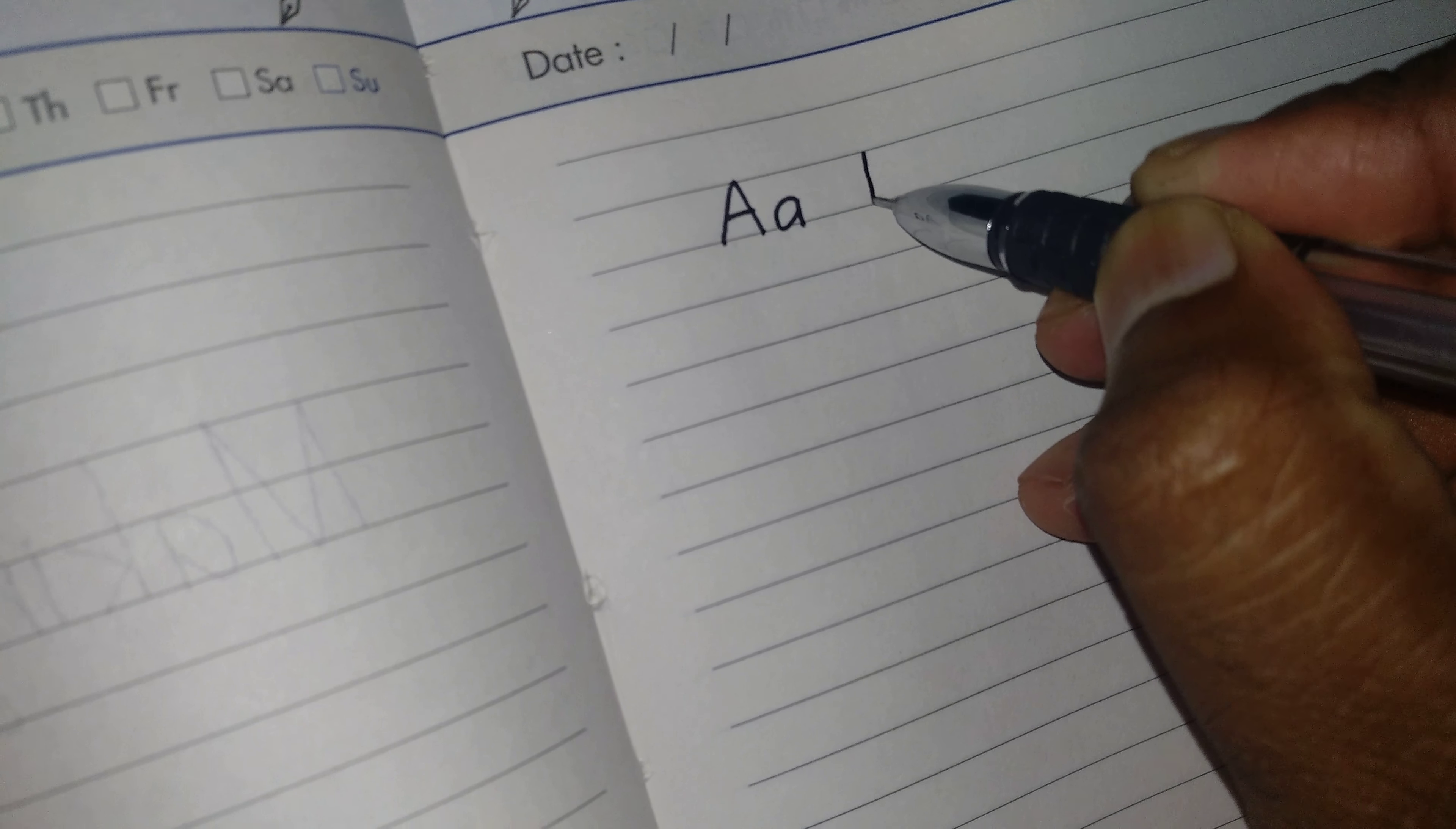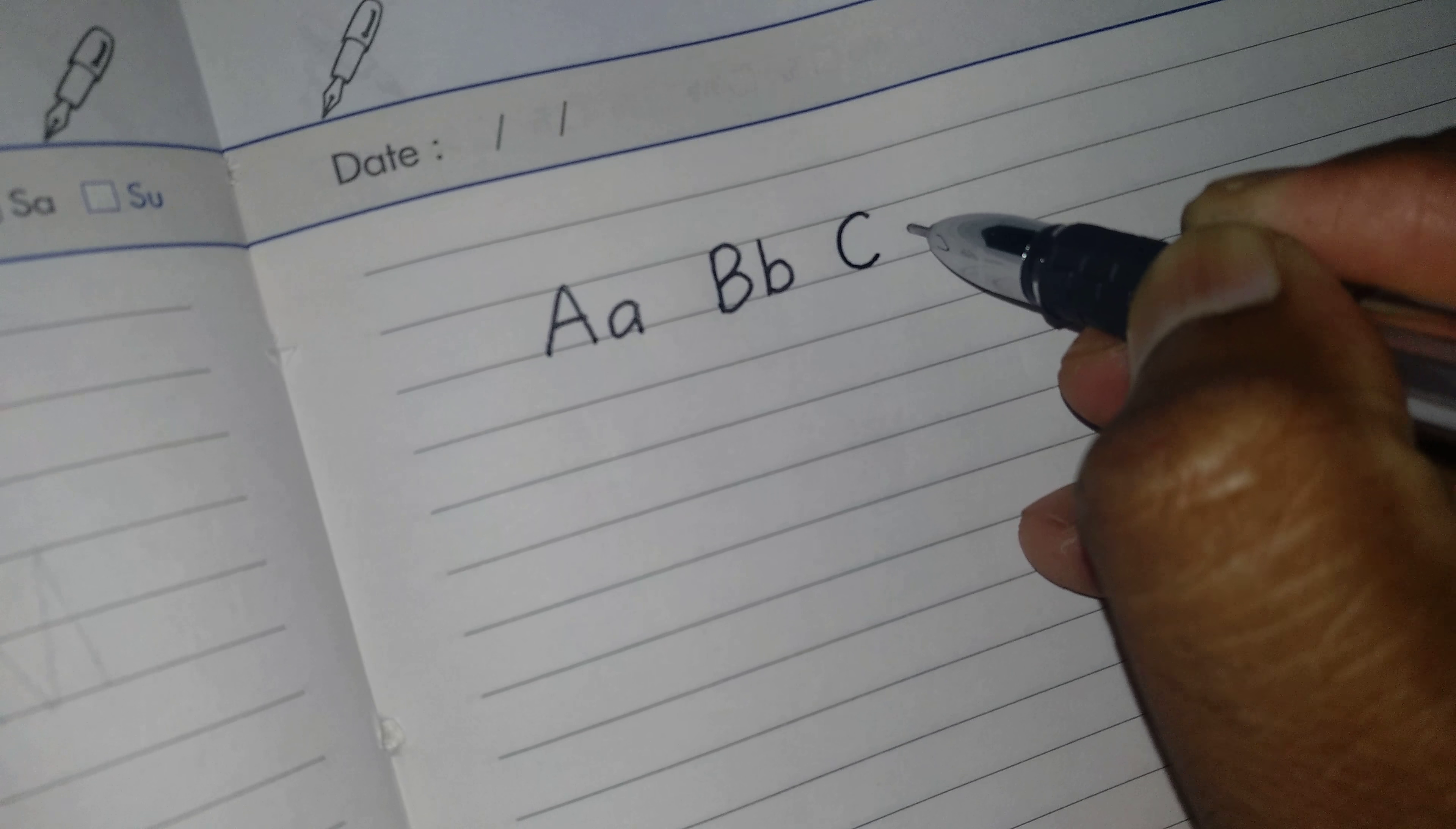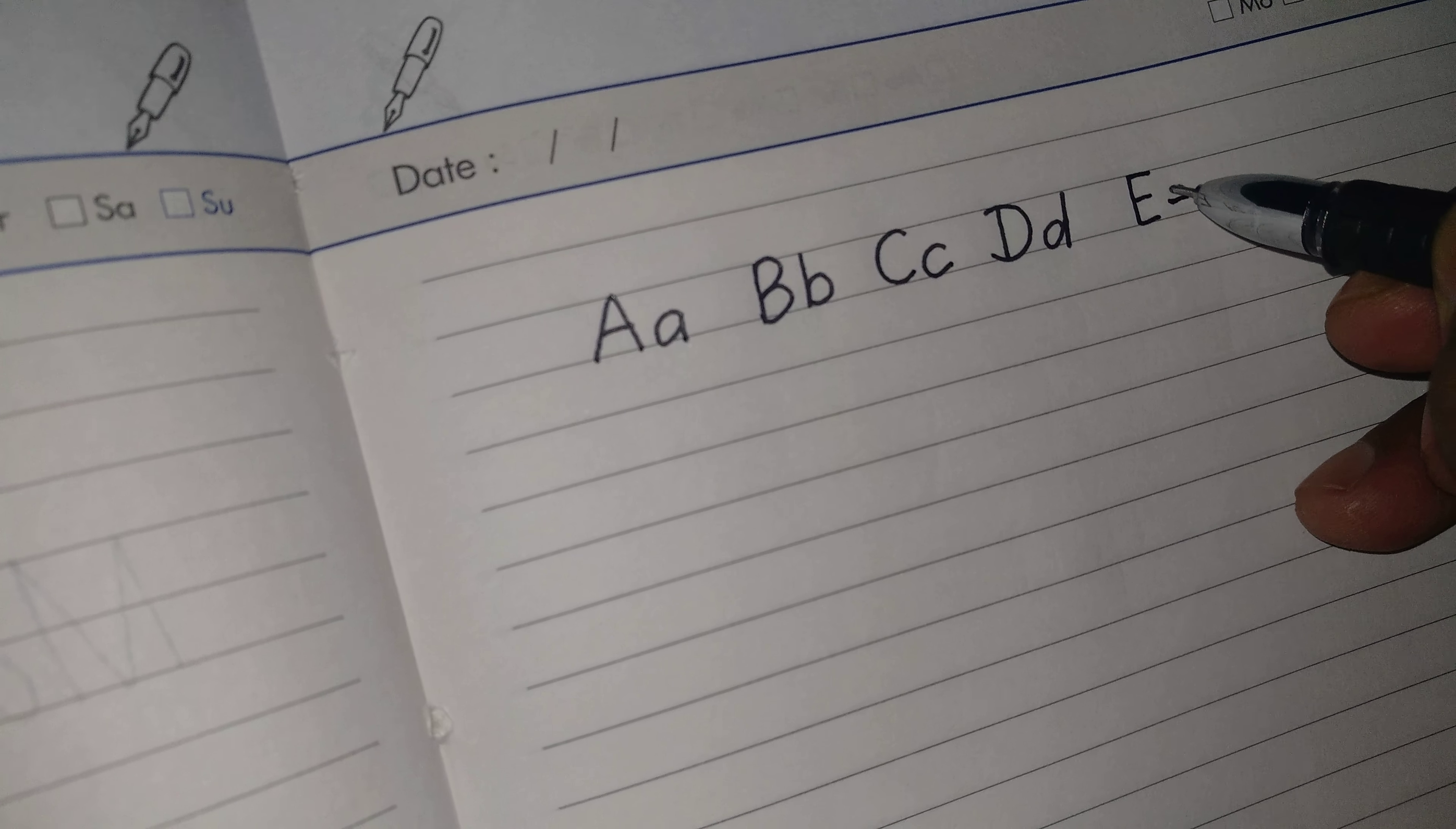This is C, the small one C, and this is D and this is small one, and E and E.